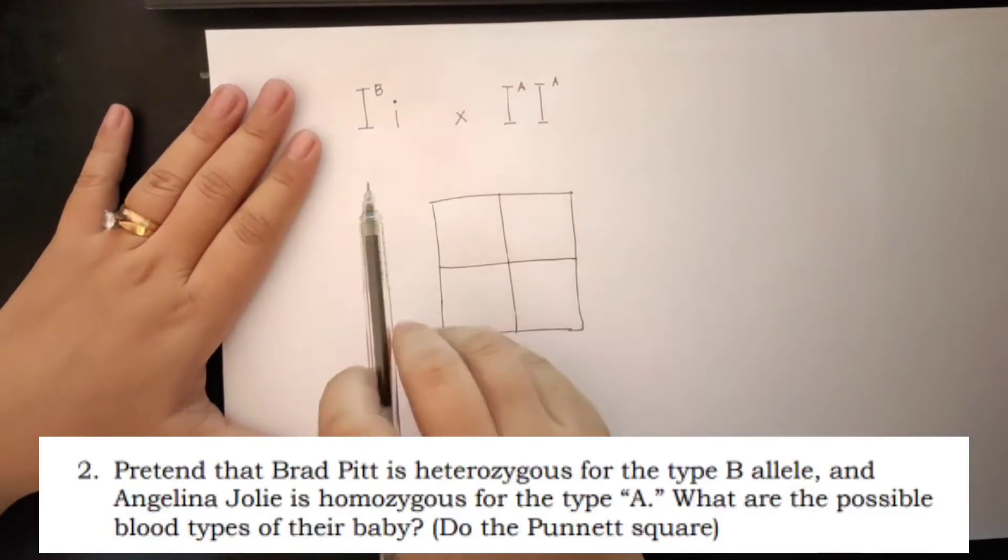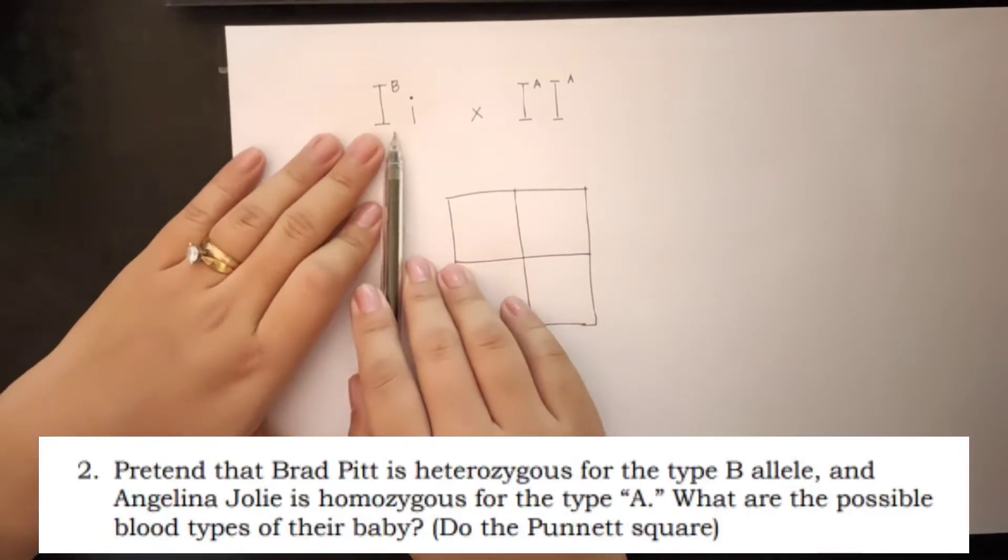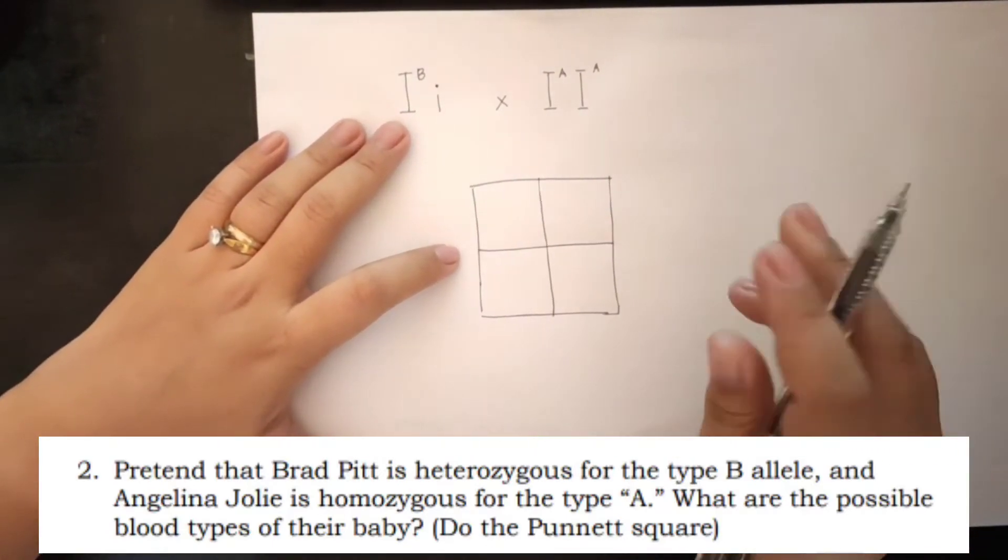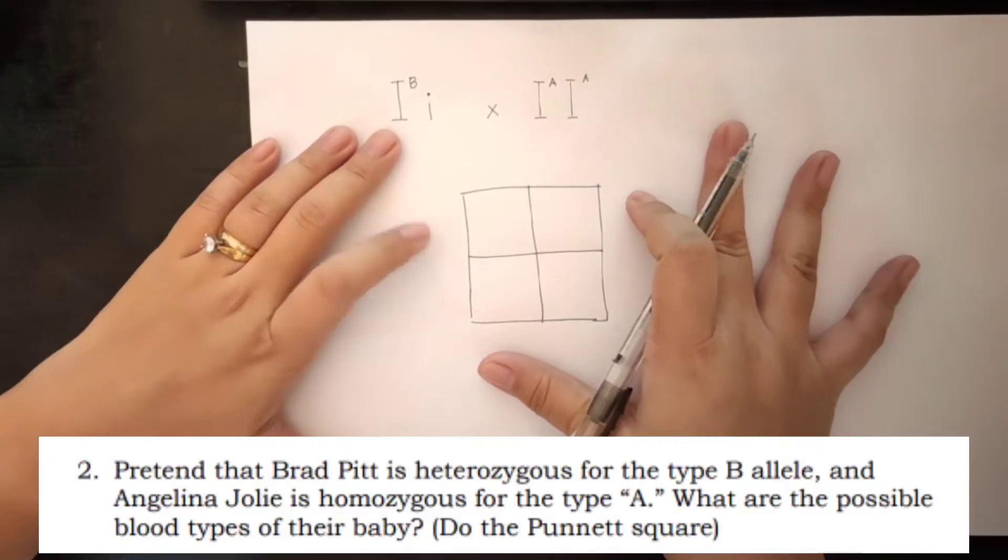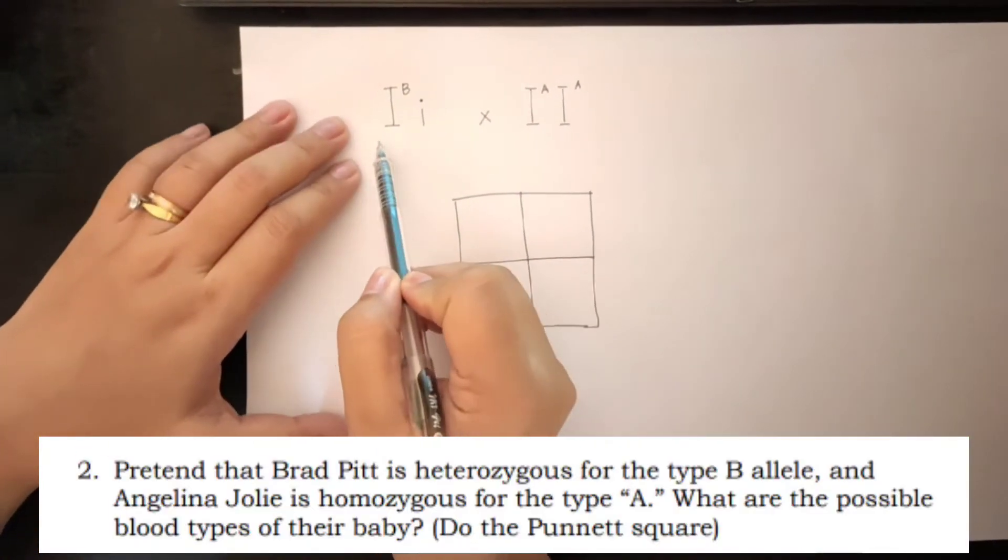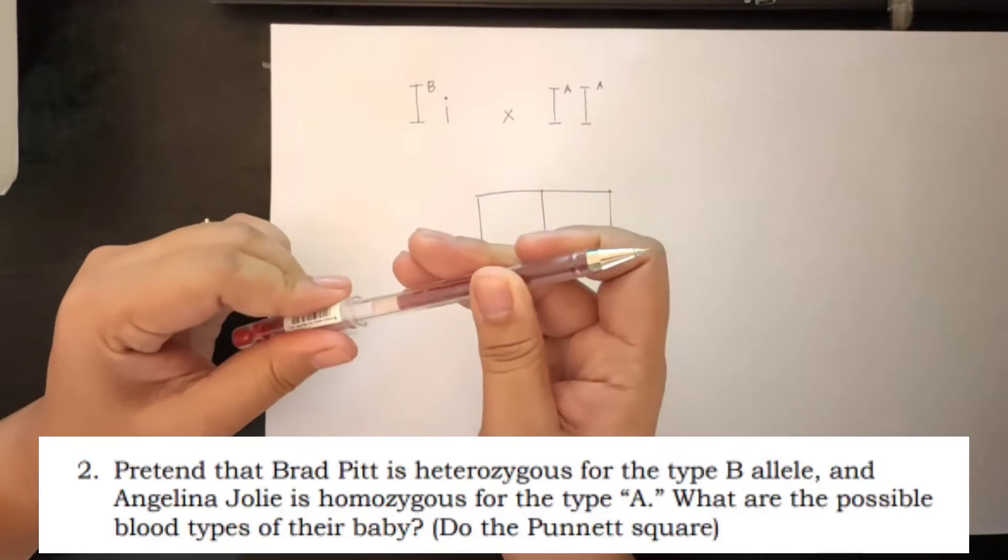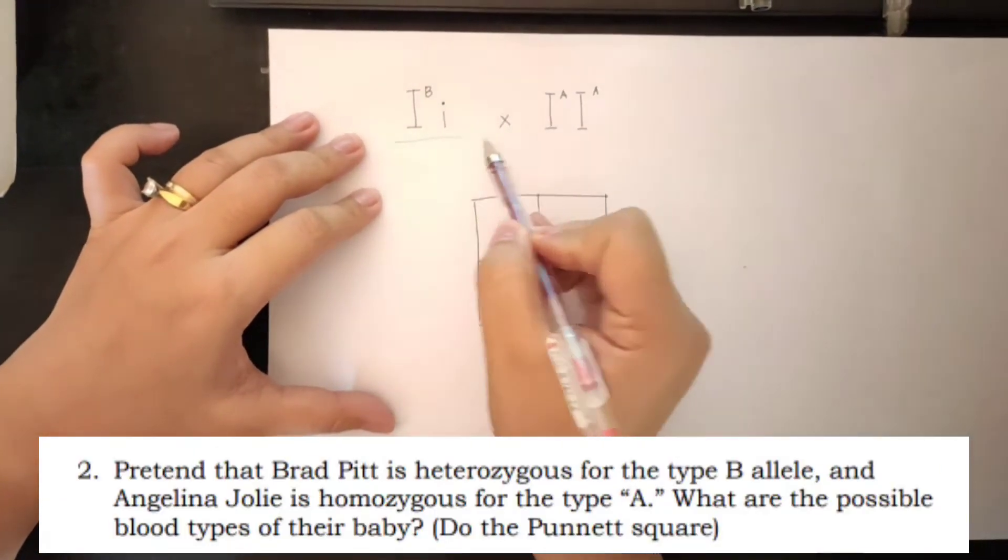Okay, so here's the father and the mother. And we are going to draw a Punnett square for the possible blood types of the baby. So first, we are going to start here. Okay, I'm gonna use red ball pen.